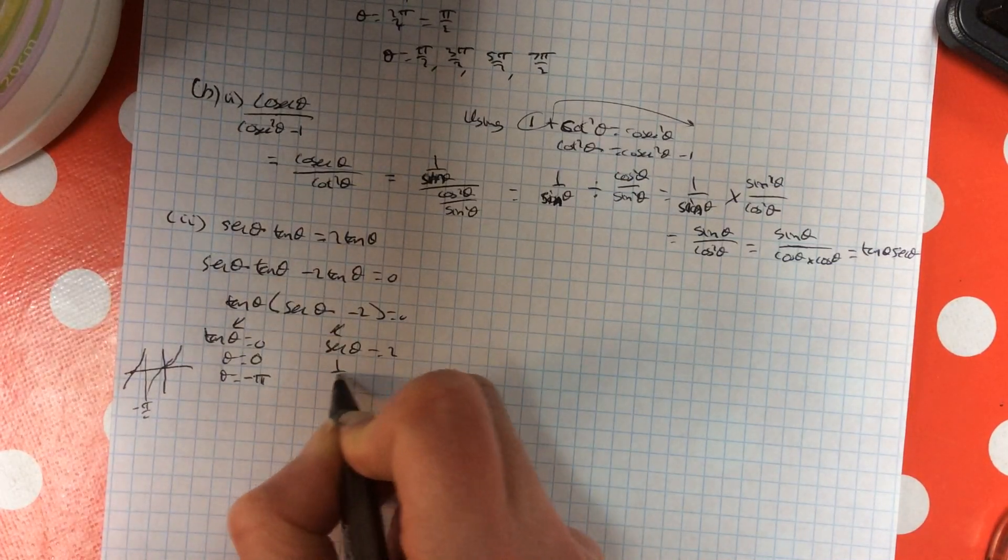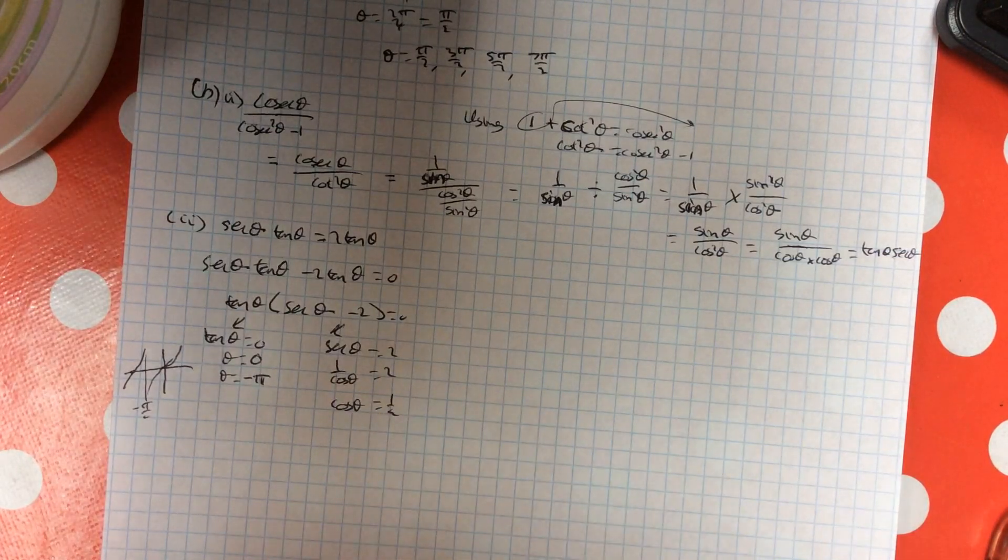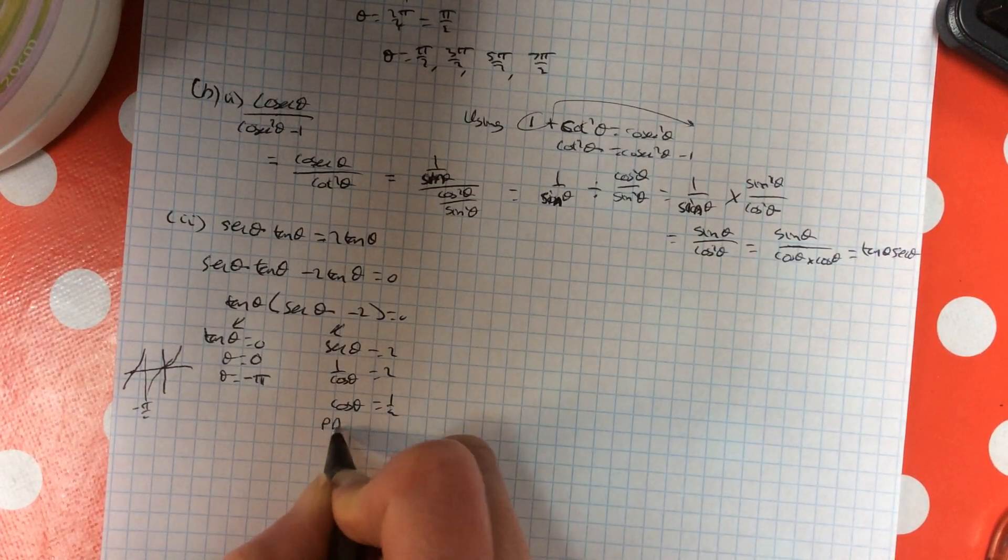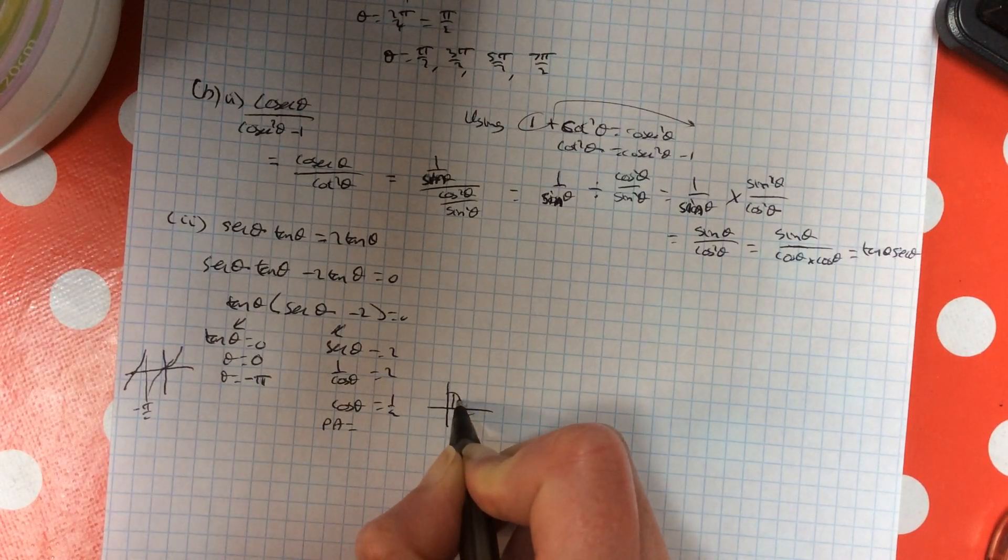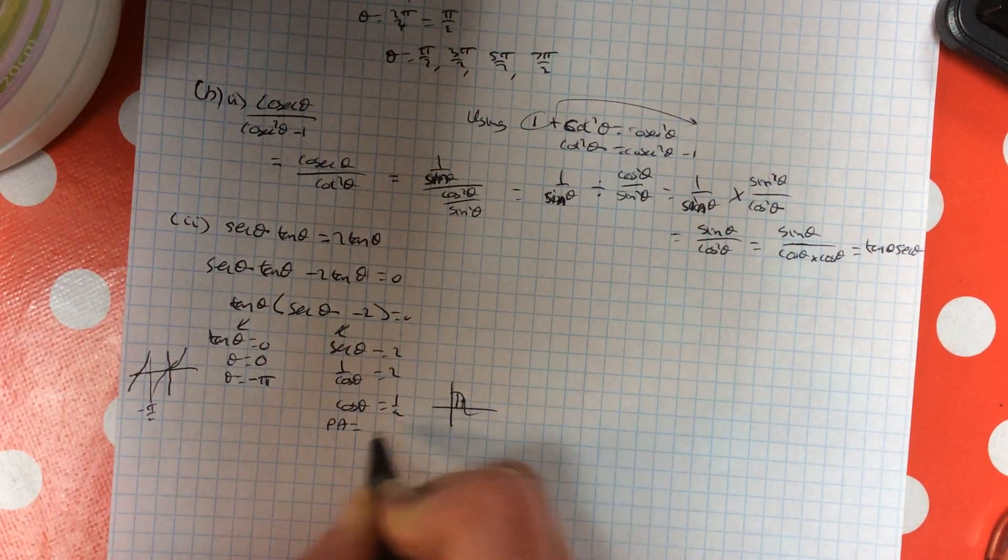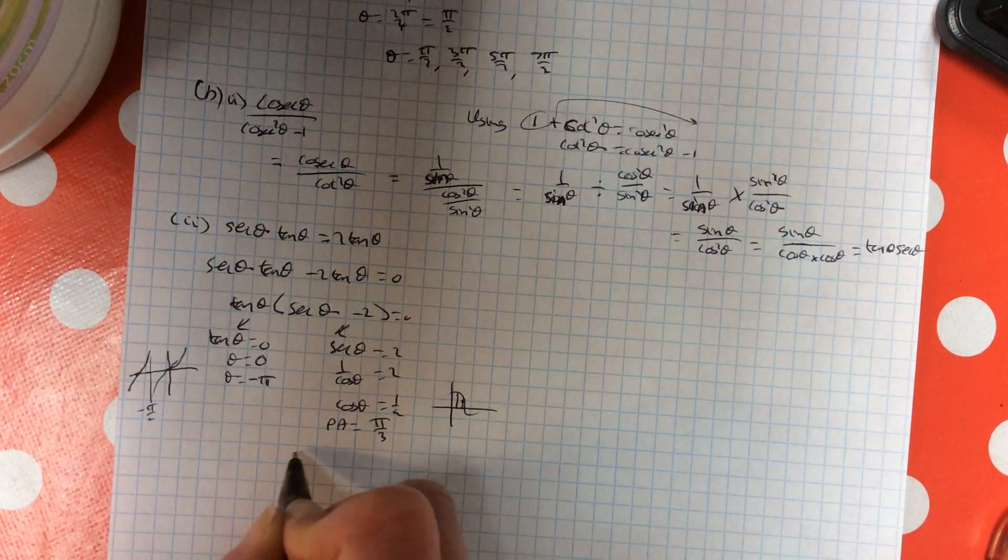This one here is 1 over cos equals 2, so cos is 1 over 2. So your principal angle there from the cos graph is this one here, it's the lower one. So it's 60 degrees. I'm in radians, so it's pi over 3.